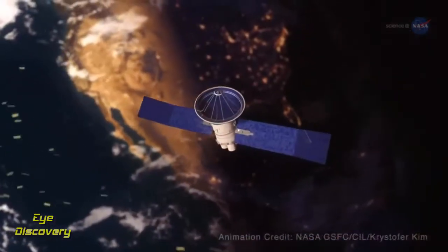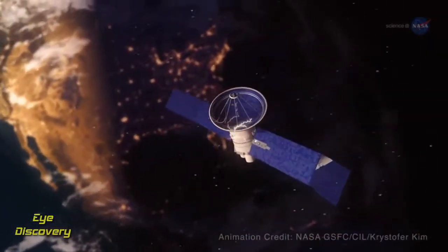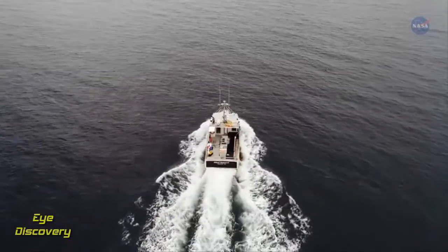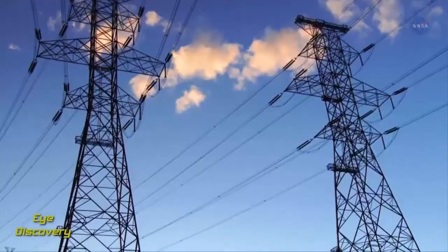In some cases, it can also set off space weather storms that disrupt everything from our satellites in space, to ship communications on our oceans, to power grids on land.